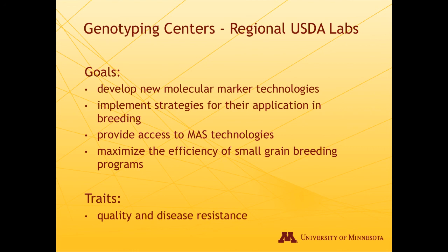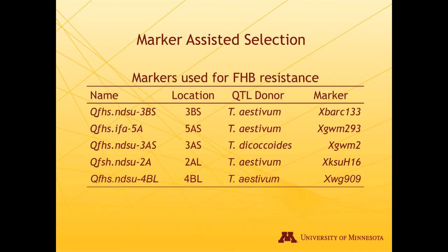The real goal was to develop new marker technologies and implement them for breeding programs, centralizing marker-assisted selection to make it more efficient. All wheat and barley breeding programs in the U.S. have access to these four labs. They focus primarily on disease resistance but also look at quality traits. Most breeding programs across the U.S. are now using one or more of the five major QTLs identified for Fusarium head blight resistance, and significant progress has been made identifying QTLs and introgressing them into breeding programs.